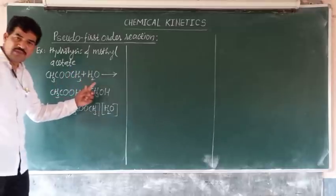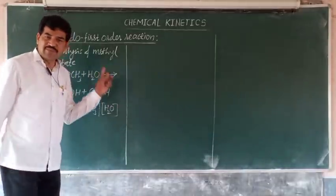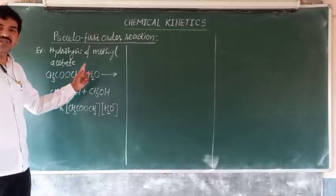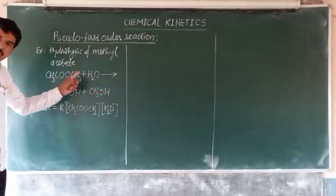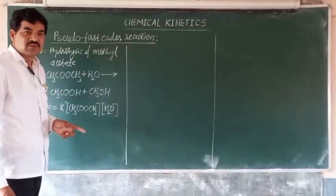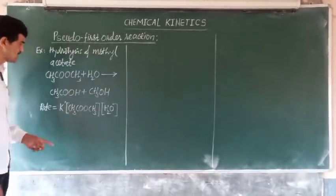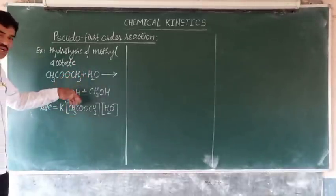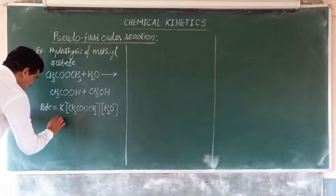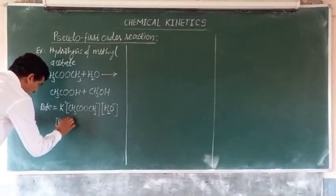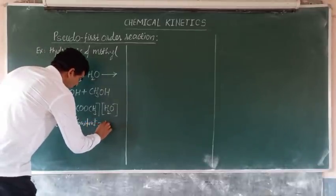This reaction is expected to be second order. But in this reaction, water — which is one of the reactants — is taken in such a large excess that during the course of the reaction, the concentration of water decreases by a very small, negligible amount. So the concentration of water practically remains constant, equal to k''.